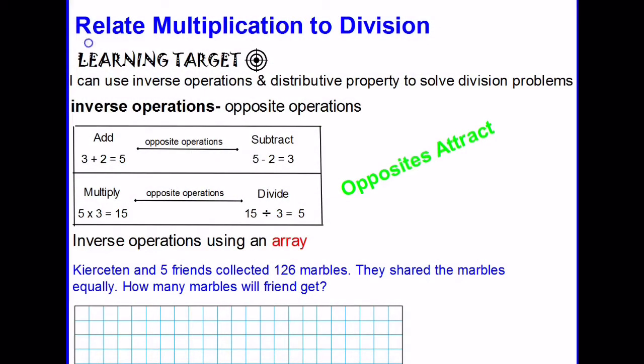Hi kids, today we're going to be talking about relating multiplication to division. Our learning target for this lesson is to be able to use inverse operations and distributive property to solve problems. A review of inverse operations simply means that they are opposite operations. For example, addition and subtraction are opposite operations, multiplication and division are opposite operations. We can use the notion of opposites attract to think about multiplication, division, and how they are related.